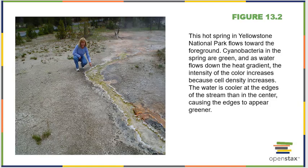Hot springs in Yellowstone National Park can show you what early earth conditions might have looked like, because these springs are so incredibly hot that they have really high concentrations of elements like sulfur and methane gases. The cells that live in them are more similar to the cells that were around at the earlier part of earth's evolution than what we would find floating in the oceans today.